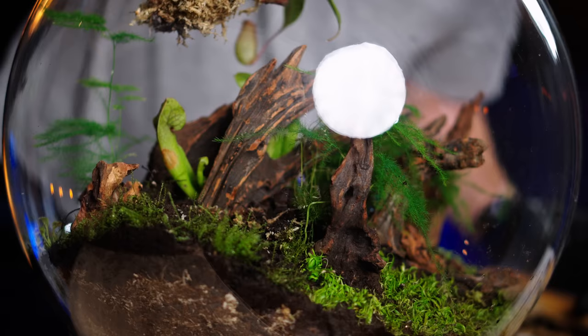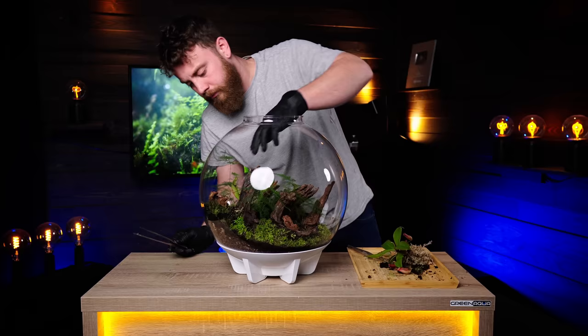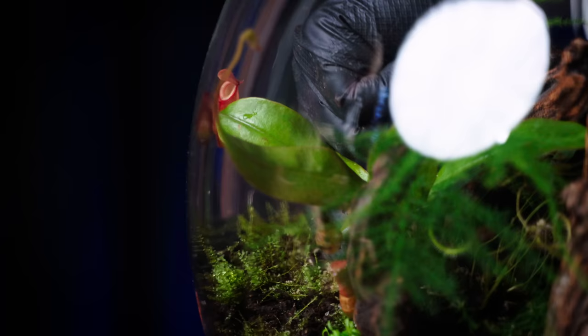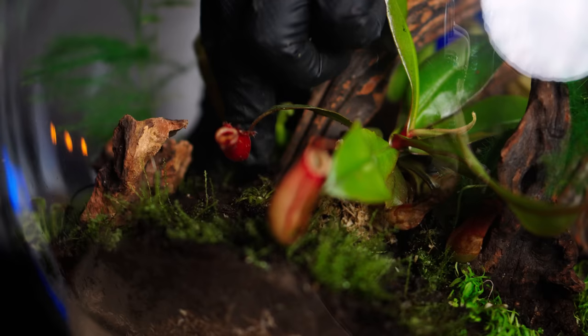And lastly, he adds the crown jewel of this scape. It's a Nepenthes from Borneo. This is the plant that people usually associate carnivorous plants with. They are epiphytes, so he just wraps some sphagnum moss around the roots. That's it.